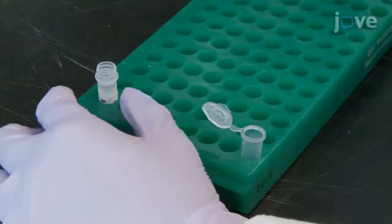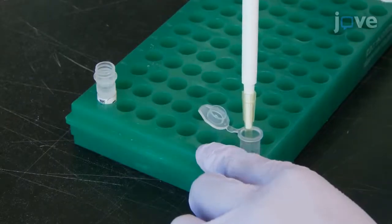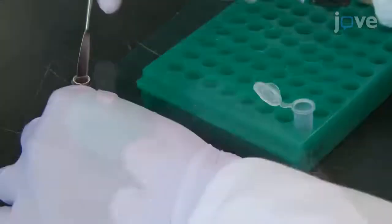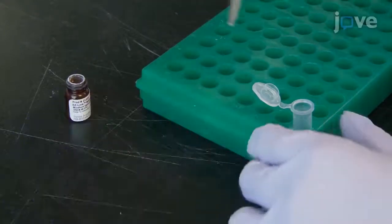While the Jurkat cells are in the centrifuge, aliquot 10 mL of DMSO into a new microcentrifuge tube. Next, dissolve a minimal amount of NHS biotin in the DMSO.